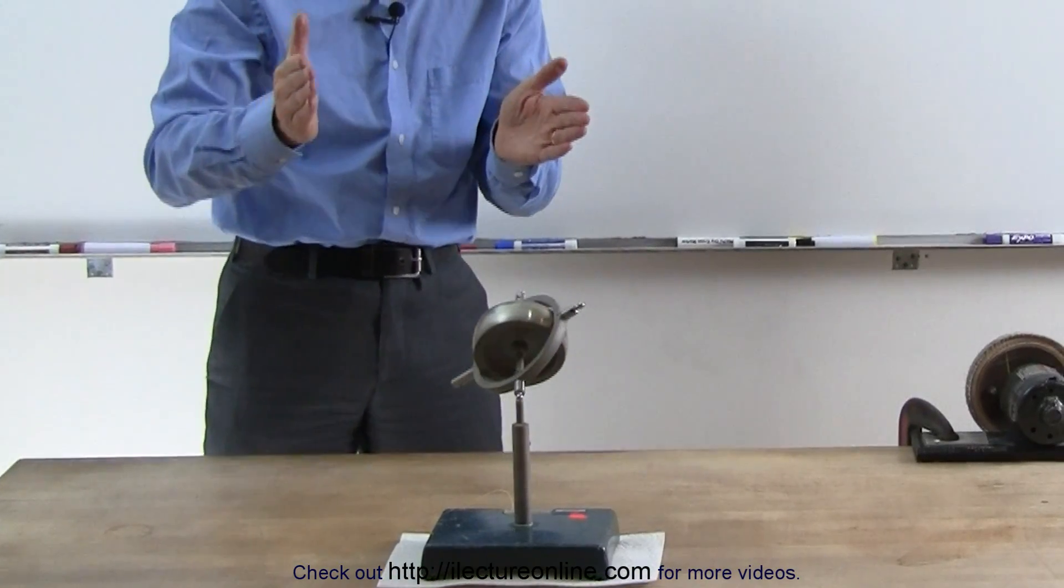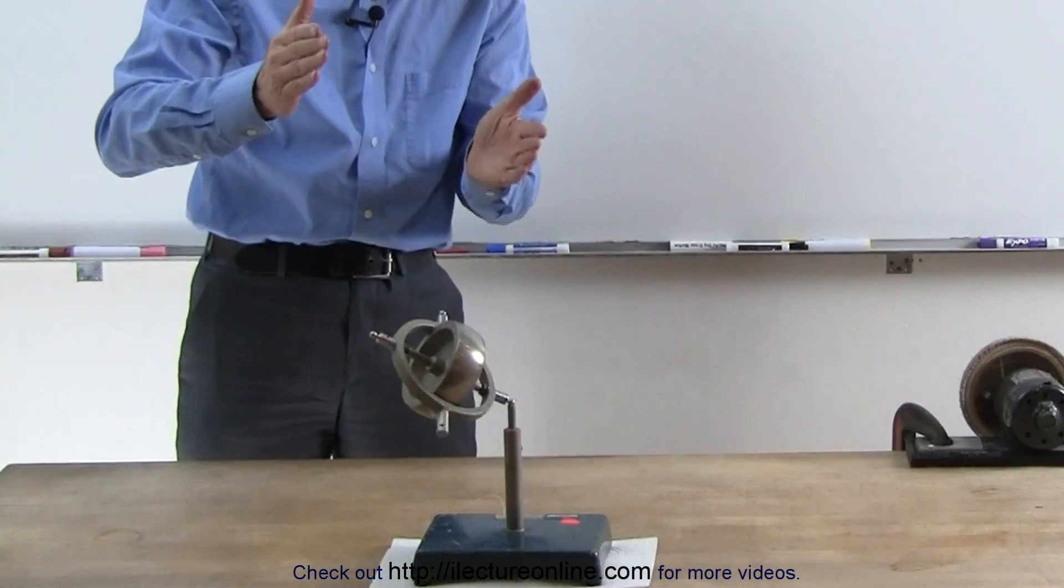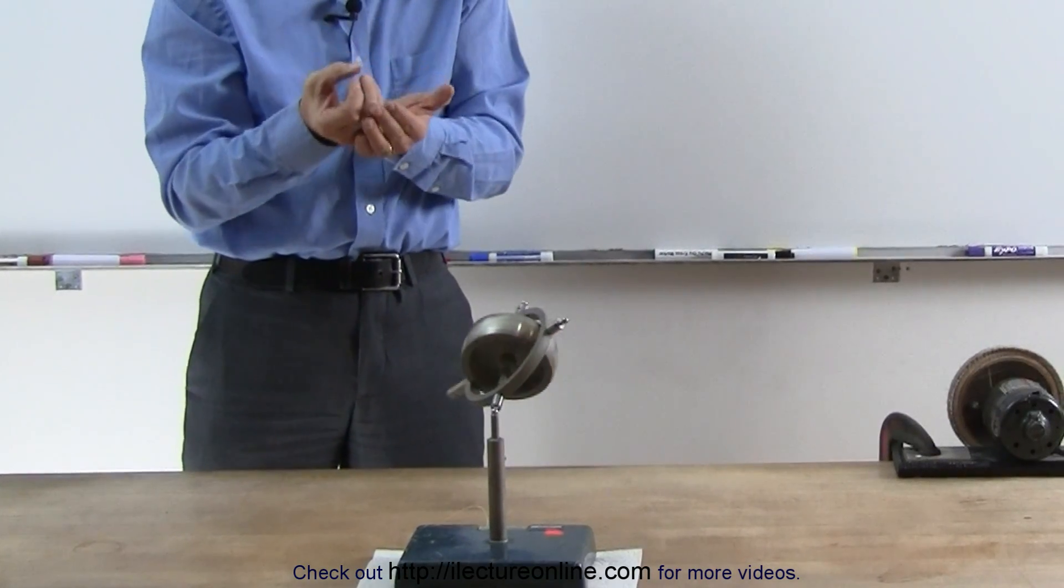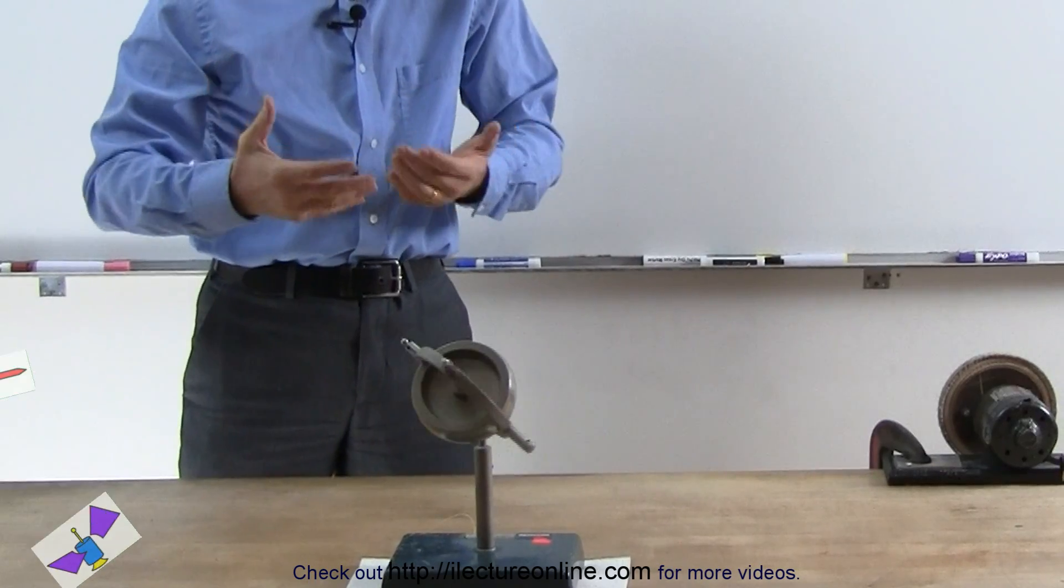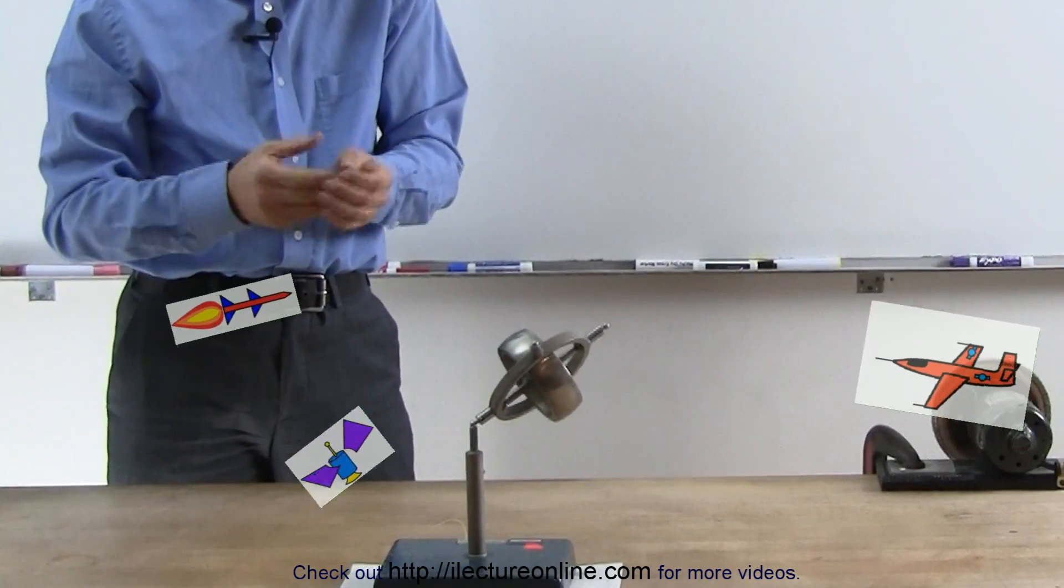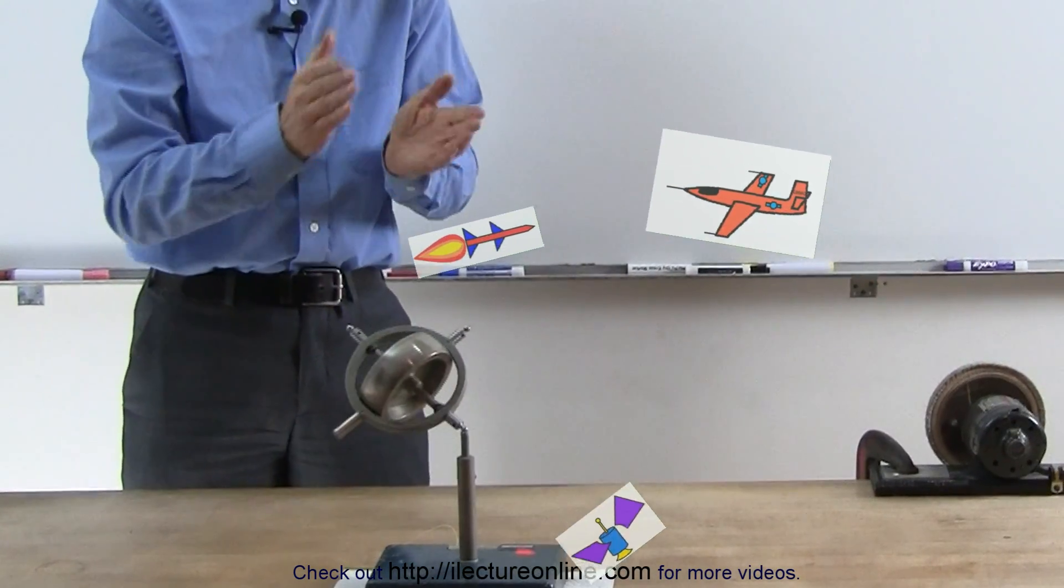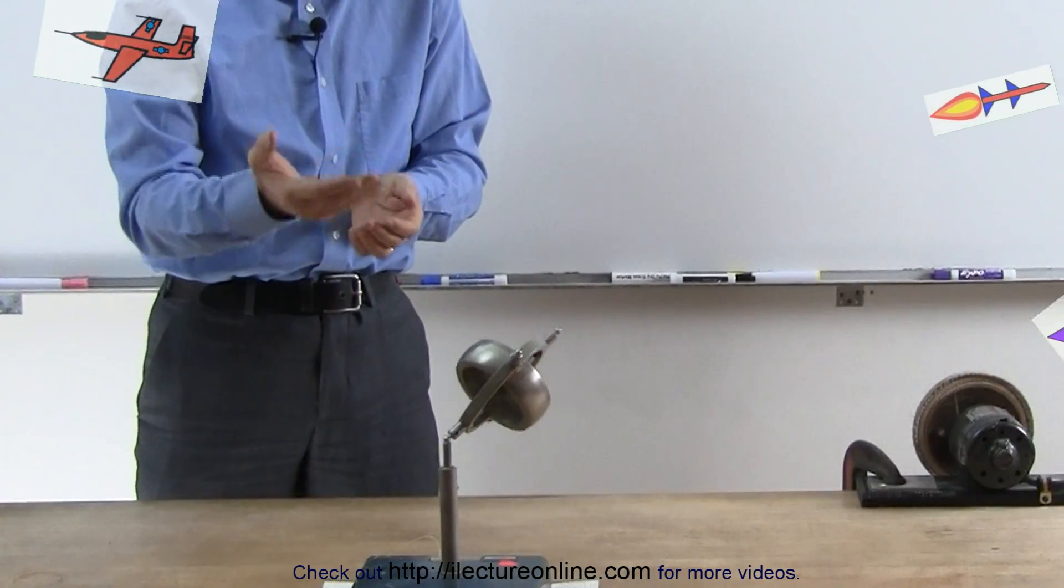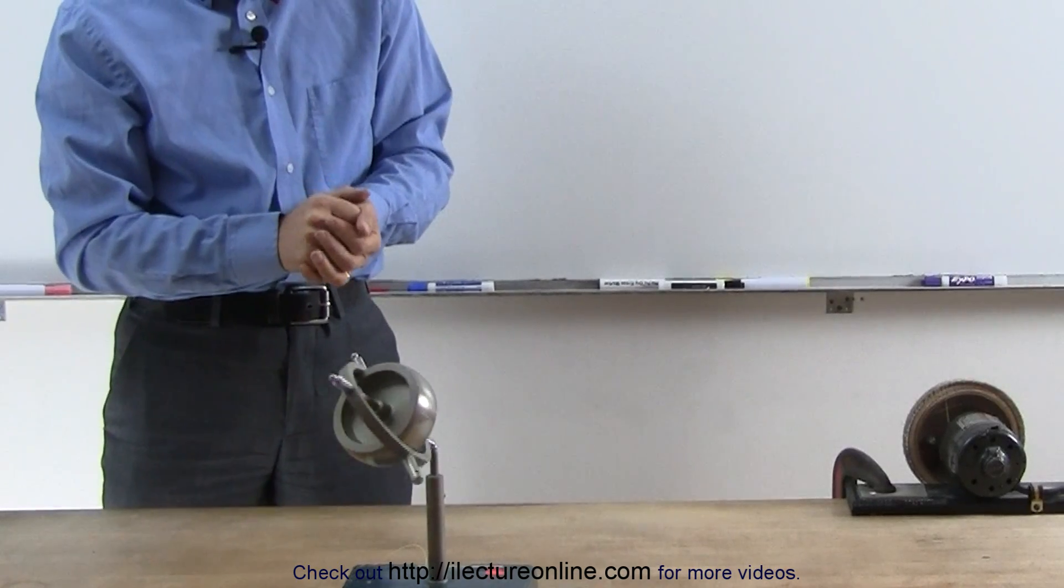When you cause a gyroscope to change direction or change angle, it applies a force, and that force can then be detected, and that detection of that force enables satellites and missiles and airplanes and things like that to detect what direction they're flying, what direction they're changing, and then compensate for that. So it's actually used in all kinds of navigation purposes as well.